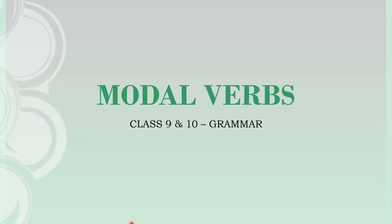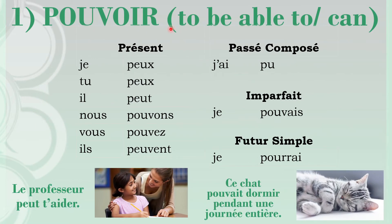The first one is pouvoir, which means 'to be able to.' All modal verbs function as regular verbs, however they are irregular when it comes to conjugation. Pouvoir is the modal equivalent of 'can,' showing your ability. In the present tense it is: je peux, tu peux, il peut, nous pouvons, vous pouvez, ils peuvent.